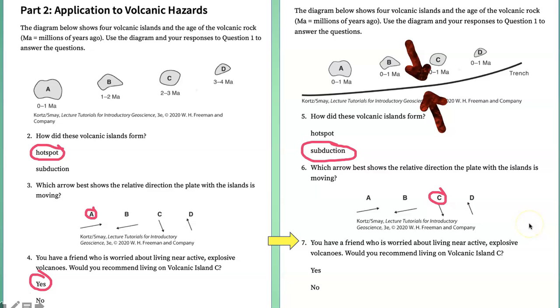Finally, you have a friend who is worried about living near active volcanoes. Would you recommend them living on volcanic island C? No, because these are active volcanoes. I hope that clarifies the difference between volcanic chains formed by hot spots and by convergent plate boundaries.